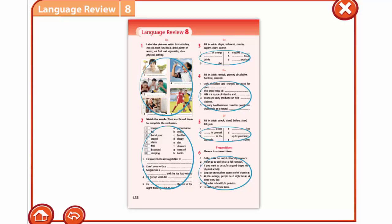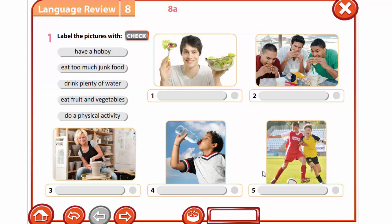Now let's do the language review. Open your books to page 120. Exercise 1 is devoted to Model A lesson. We are to label the pictures with the expressions: have a hobby, eat too much junk food, drink plenty of water, eat fruit and vegetables, do a physical activity. Match these expressions with the pictures.